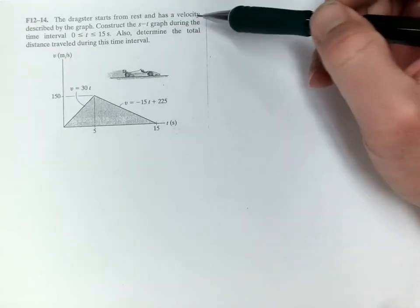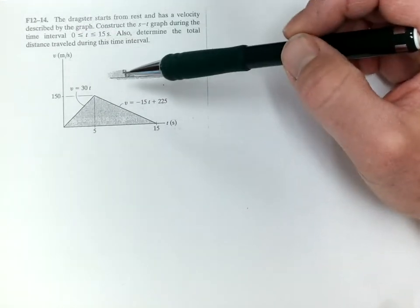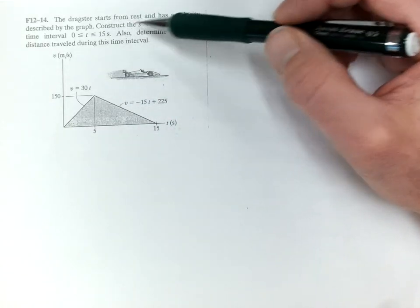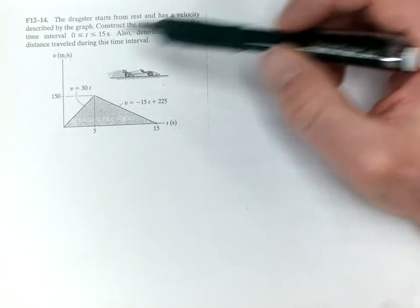The dragster starts from rest and has a velocity described by the graph. So it's not a very realistic graph, but we'll go with it. Construct the s-t graph during the interval.